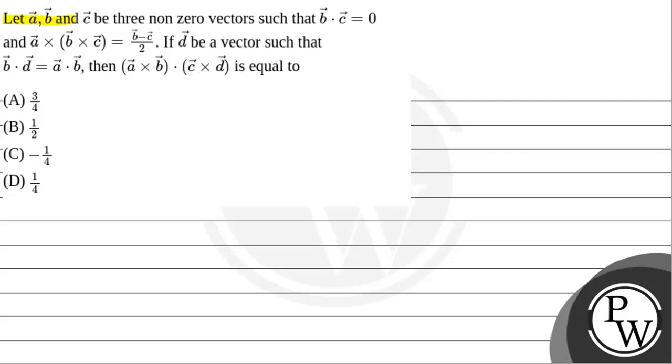The question says: let a, b and c be three non-zero vectors such that b·c = 0 and a×(b×c) = (b-c)/2. If d be a vector such that b·d = a·b, then (a×b)·(c×d) is equal to? So here we have four options. We have to solve this and find which option is correct answer.